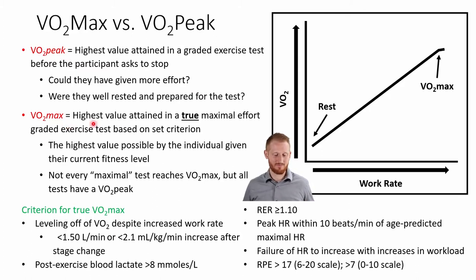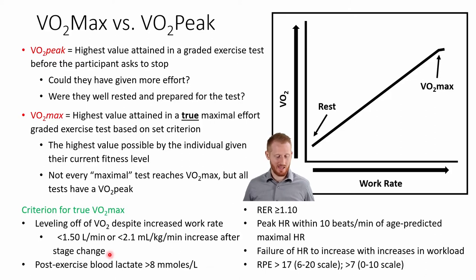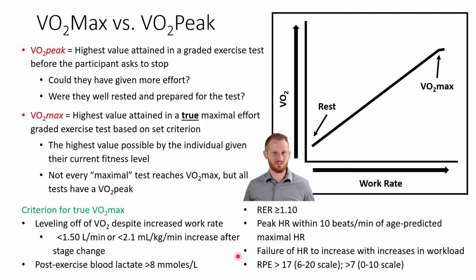VO2 max, by contrast, is the highest value attained during a true maximal effort — the best they could do at their current fitness level. Every test has a VO2 peak, but not every test reaches VO2 max. When a true VO2 max is achieved, the VO2 max and VO2 peak are the same. We therefore need specific criteria to determine whether a test truly represents a VO2 max rather than just a VO2 peak.